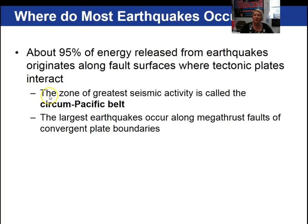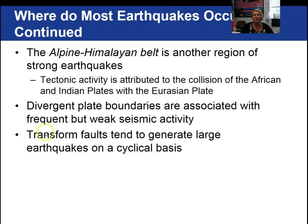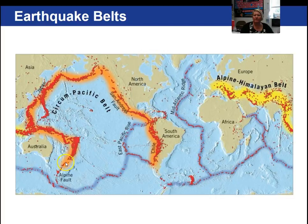Most earthquakes occur in the Ring of Fire along the Pacific plate. It is the megathrust faults along convergent plate boundaries that are notorious for producing very large earthquakes and the potential for tsunamis. Another area where large earthquakes occur is the Alpine-Himalayan belt. Generally, divergent plate boundaries are not associated with large earthquakes, and transform faults may have large earthquakes but they tend to be cyclical in nature.